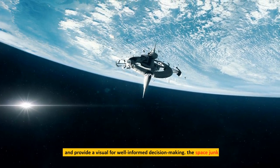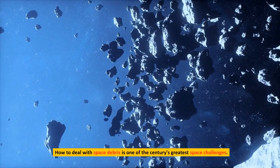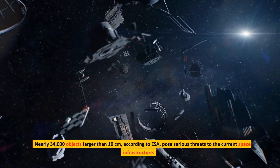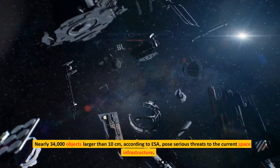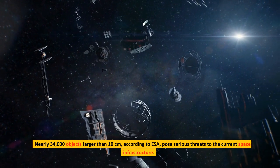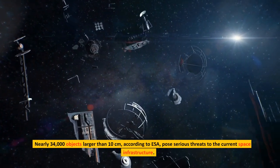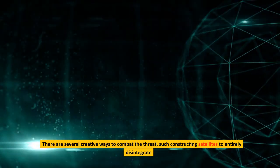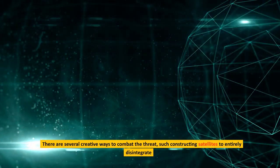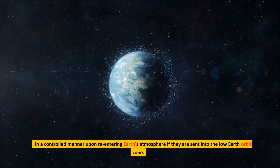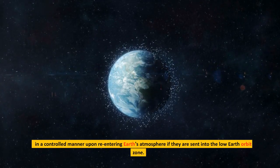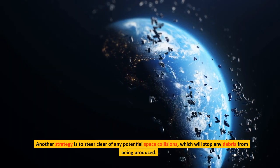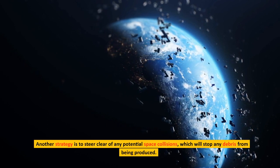The space junk. How to deal with space debris is one of the century's greatest space challenges. Nearly 34,000 objects larger than 10 centimeters, according to ESA, pose serious threats to the current space infrastructure. There are several creative ways to combat the threat, such as constructing satellites to entirely disintegrate in a controlled manner upon re-entering Earth's atmosphere if they are sent into the low Earth orbit zone. Another strategy is to steer clear of any potential space collisions, which will stop any debris from being produced.